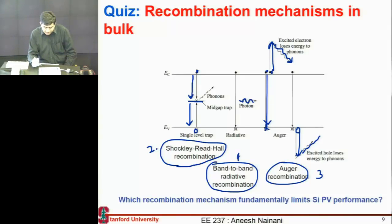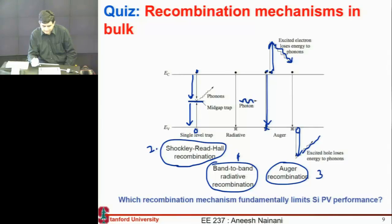So let me ask: what do you think is the limiting recombination mechanism for solar cells among these three? [Student answers: Shockley-Read-Hall.] How many people think band-to-band? Okay, one person.